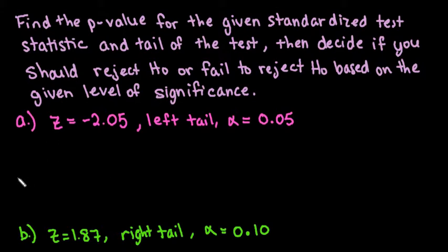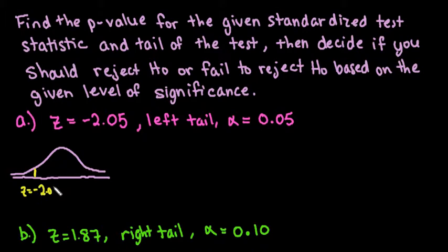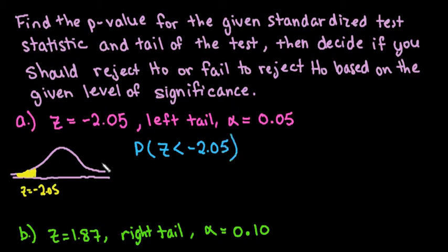When you are given the information, it's always important to draw a picture so you can see visually what you are finding. For z equals negative 2.05, that would be down here on the left. When it says left tail, that means we're trying to find the area to the left. The p-value is the probability of getting a z-score less than the standardized test statistic — so we're looking for P(z < −2.05). The p-value stands for probability value: how likely it is to get results like these if the null hypothesis were actually true.